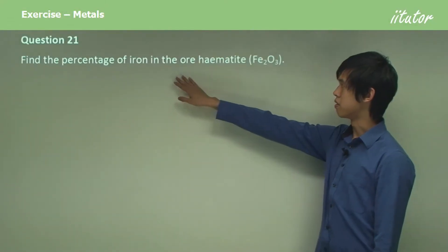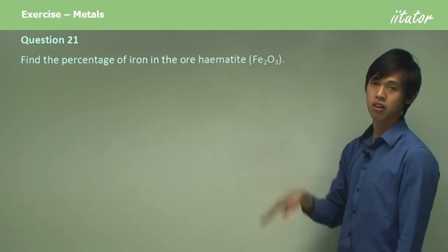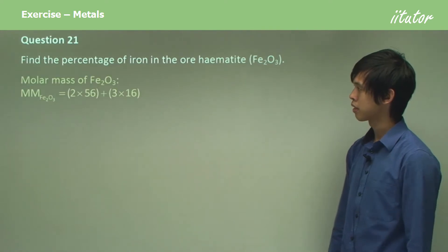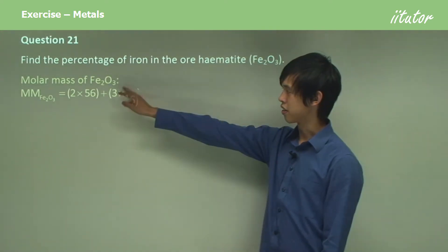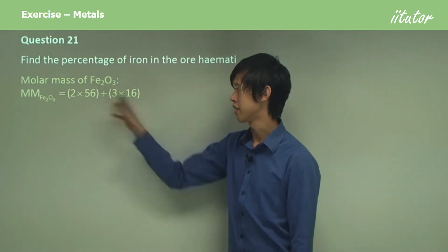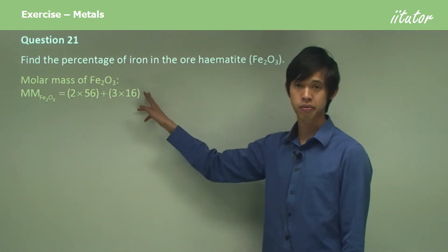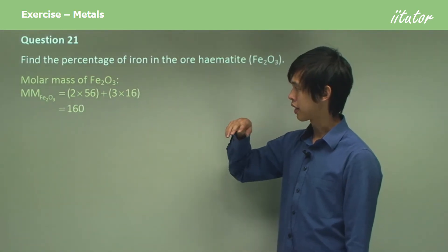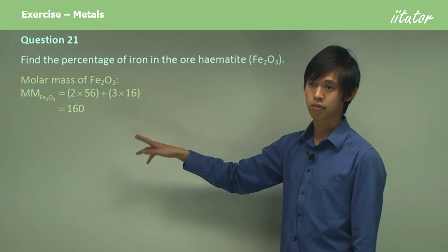Find the percentage of iron in the ore hematite, and here it is, Fe2O3. So the molar mass of Fe2O3 is this. We look this up on our periodic table, and it's 160 grams per mole.